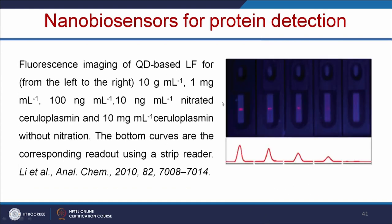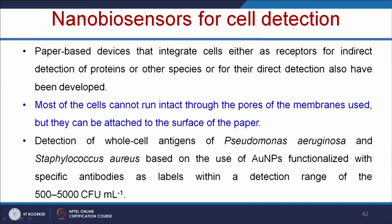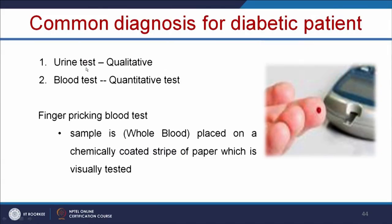Quantum dots can also be used for diagnostic applications, and we can measure the fluorescent intensity using a strip reader. Another example is nanobiosensors for cell detection. Cells cannot run intact through the pores of the membranes, but they can be attached to the surface of the paper. Using this approach, we can detect pathogens like Pseudomonas or Staphylococcus bacteria using gold nanoparticle-functionalized specific antibodies, and it can detect 500 to 5000 colony-forming units. The common diagnosis for diabetic patients is the urine test, which gives qualitative results, or blood test which gives quantitative results.